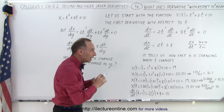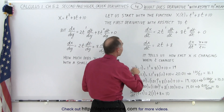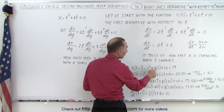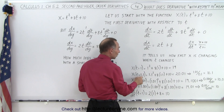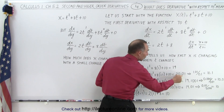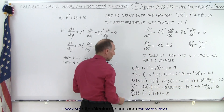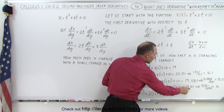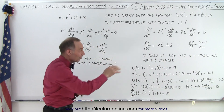To illustrate that, let's plug in some values. When t equals 1, the function x becomes 1 squared plus 8 times 1 plus 10, which is 19. When we plug in t equals 1.1, we get 20.01. When we plug in t equals 1.01, we get approximately 19.1001.